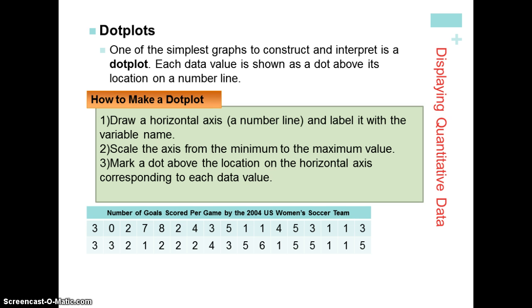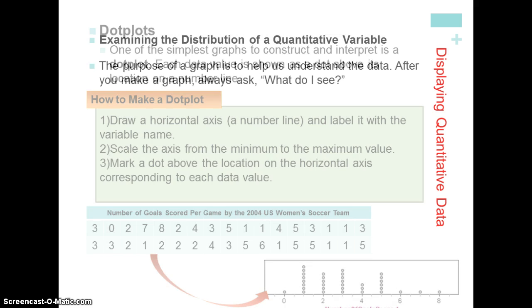Here we have the example number of goals scored by the 2004 U.S. women's soccer team. This example is on page 27 in your book. We have the raw data. We need to organize it. So what we're going to do is create the dot plot. You can see the axis along the bottom. The lowest value is zero. The highest value is eight. Then we stack dots in perfect lines so that we can get a good look at the distribution of the number of goals scored.